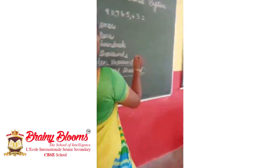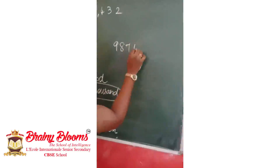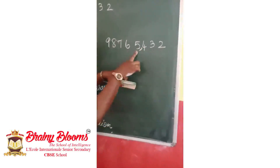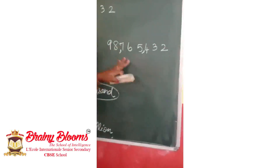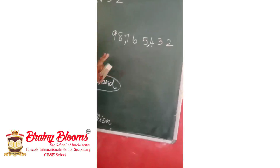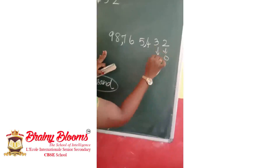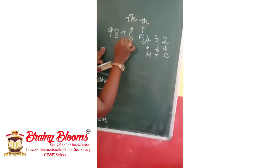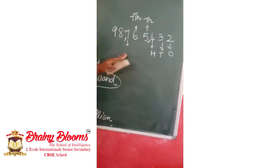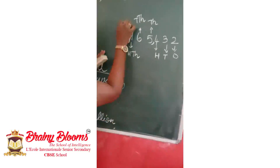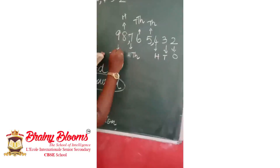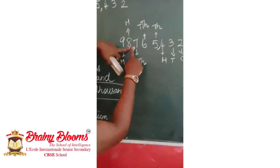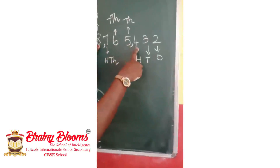Now let us move to the international system using the same example. In the international system, commas are placed from the right after three digits, followed by three digits each time. Since we don't have any more digits, we stop at two. The place values are: ones, tens, hundreds, thousands, ten thousands, hundred thousands, million, ten million. The number is ninety-eight million, seven hundred and sixty-five thousand, four hundred and thirty-two.